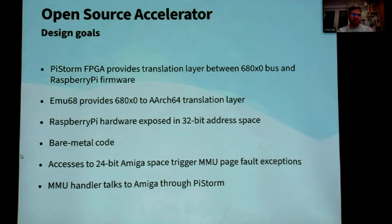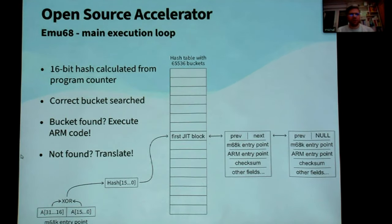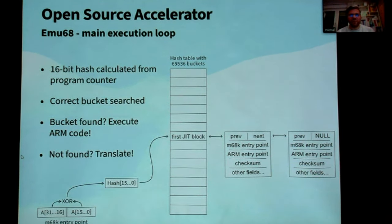Mo68 accesses the 34-bit Amiga address space via MMU page fault exceptions — this part of memory is not mapped on the ARM processor, and any access there results in a page fault trap. The MMU handler uses PyStorm to talk to the Amiga. The main execution loop takes the program counter from the Motorola CPU and checks if it has already translated the code pointed to by that address. If so, the ARM code is simply executed; if not, the translation process starts.